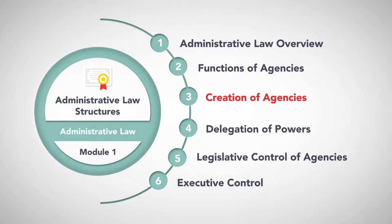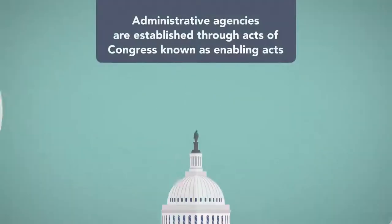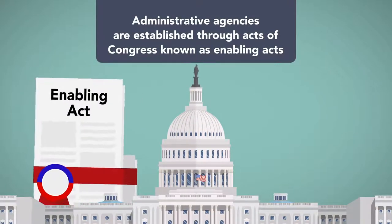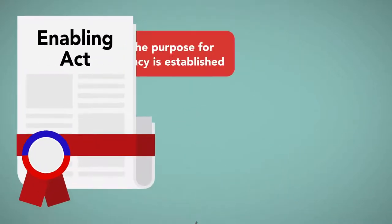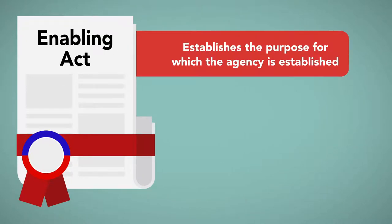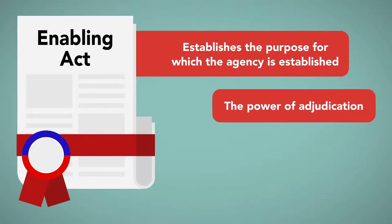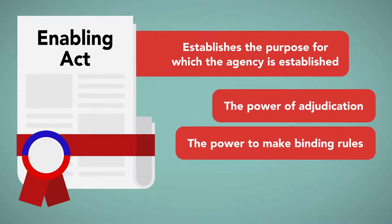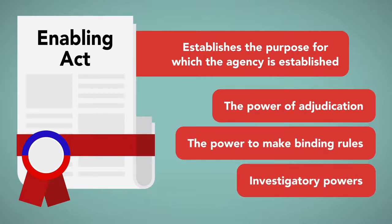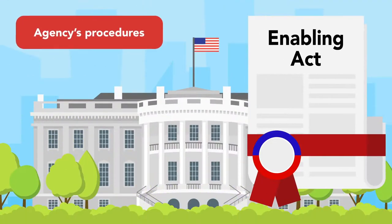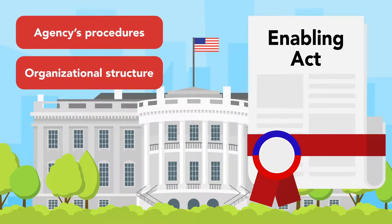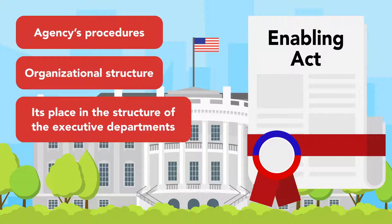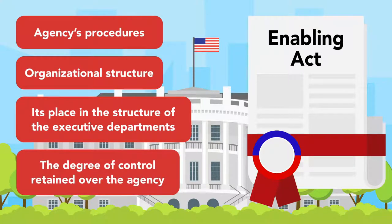Creation of agencies. Administrative agencies are established through acts of Congress known as enabling acts. An enabling act establishes the purpose for which the agency is established and grants the federal agency the power to exercise the power of adjudication, the power to make binding rules, and often investigatory powers. It outlines the agency's procedures, the organizational structure of the agency, its place within the broad structure of the executive departments of the federal government.